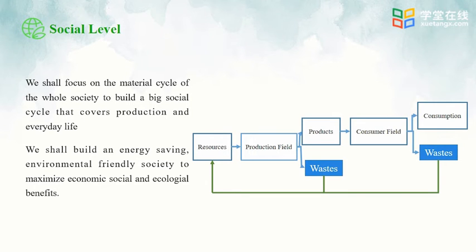We can see from this figure that during production, part of the material is made into products. When the products are consumed, they create wastes. We will recycle all wastes, whether created during production or consumption, and the recycled wastes will be used as raw materials. This is the big cycle at society level.